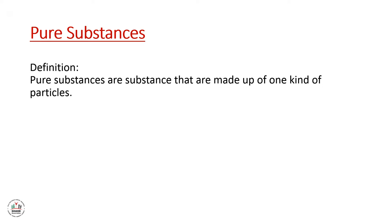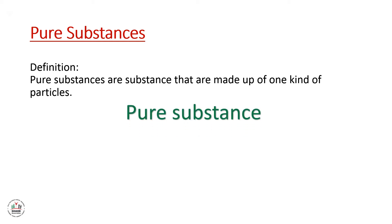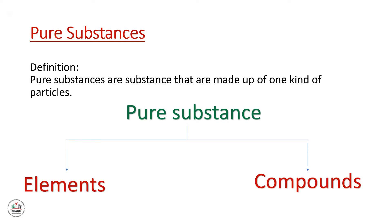Let's take the first part, which is pure substances. Pure substances are substances that are made up of one kind of particles. They include elements and compounds.